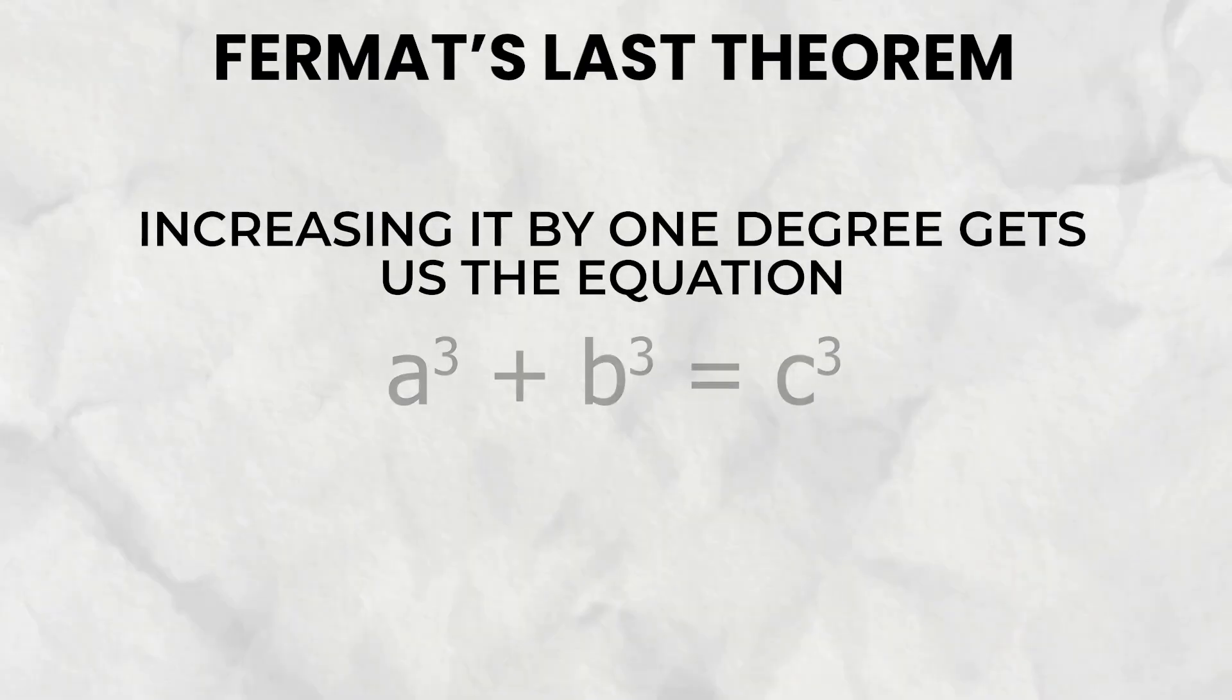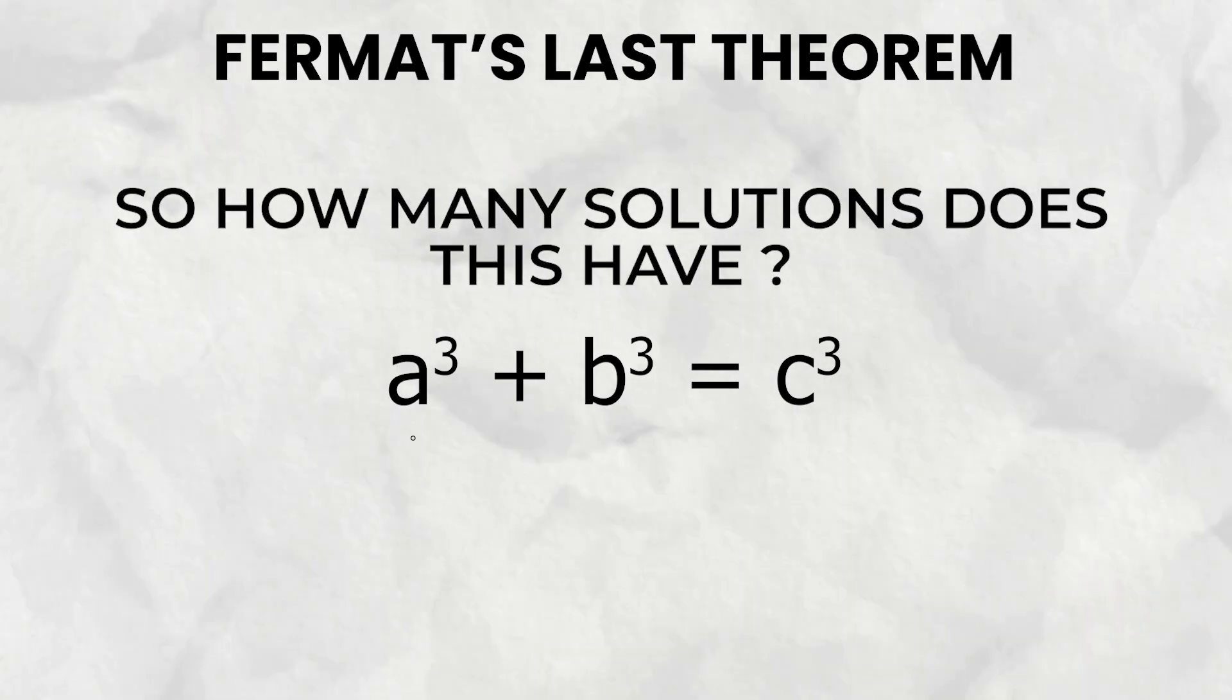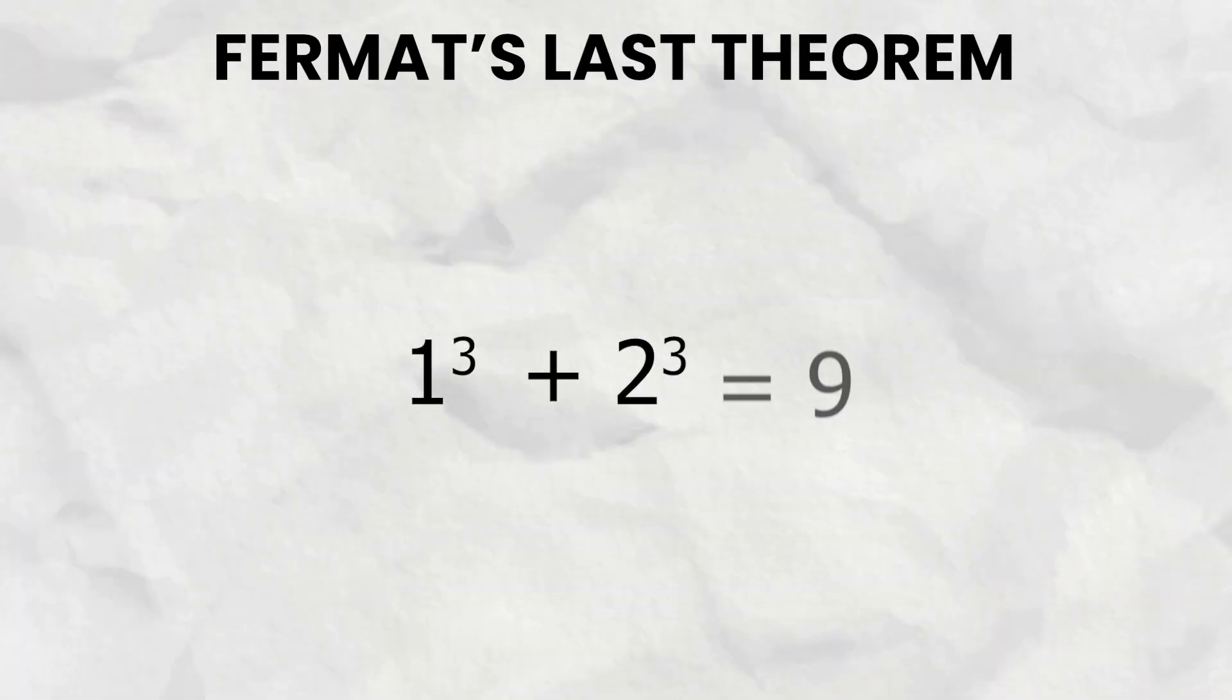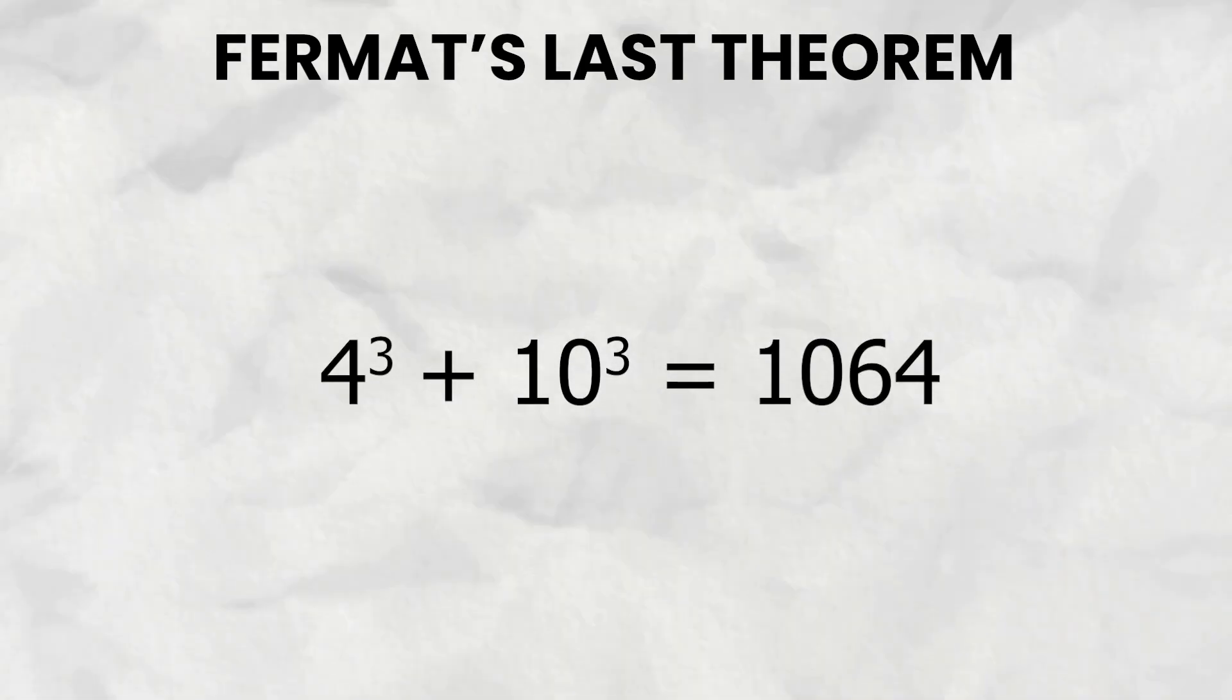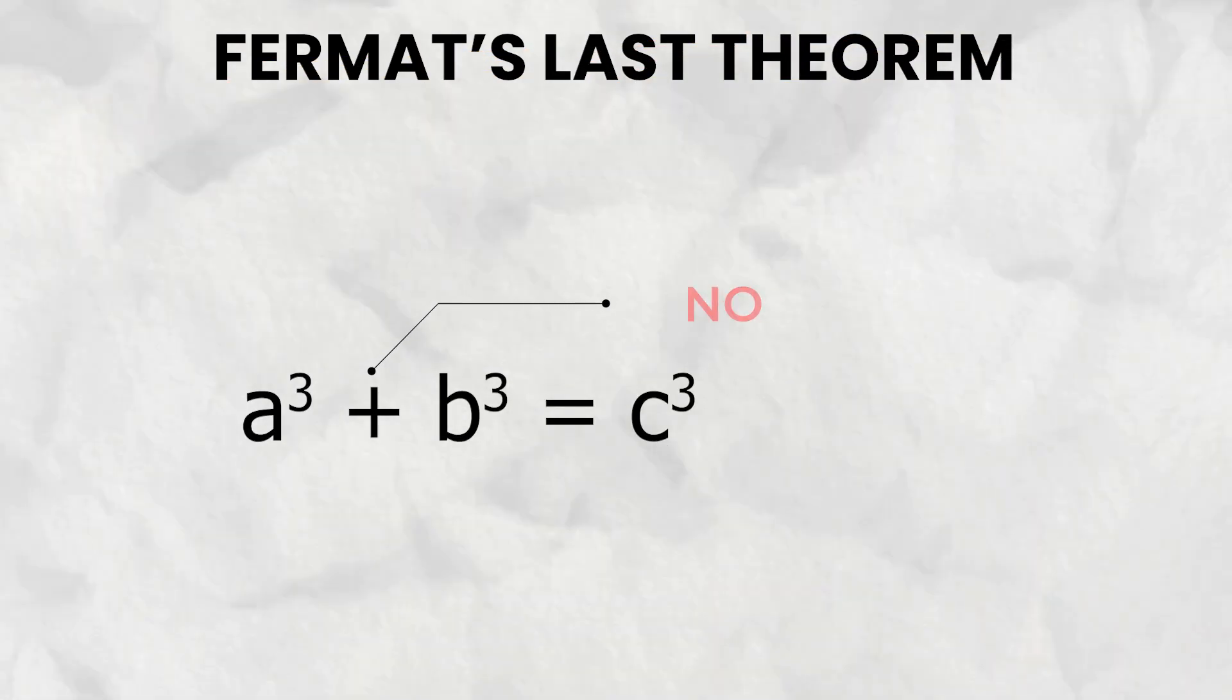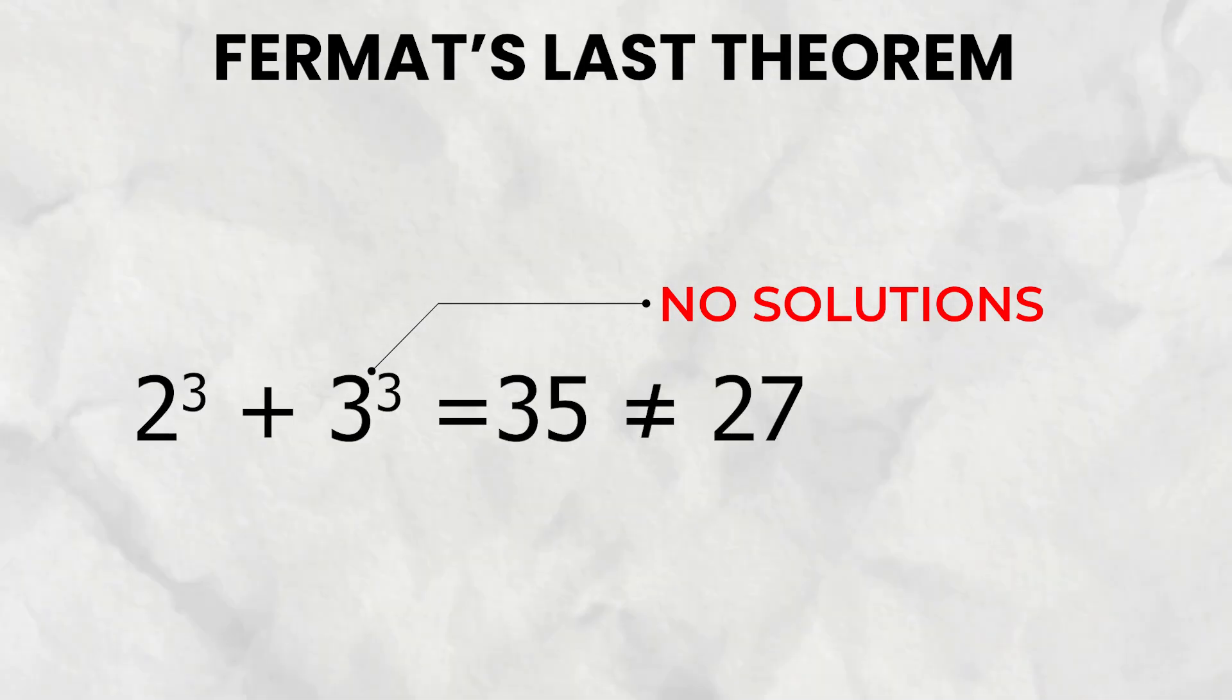Increasing it by one degree gets us the equation a cubed plus b cubed equals c cubed. So how many solutions does this have, such that a, b, and c are positive integers? We could try 1 cubed plus 2 cubed, but that is equal to 9, and 9 is not the cube of any number. We can use something like 4 cubed plus 10 cubed, but that's equal to 1064, and again, this isn't a cube number. In fact, this equation has no solutions at all. No matter which combination of a and b you insert, the result will never be a cubic number.